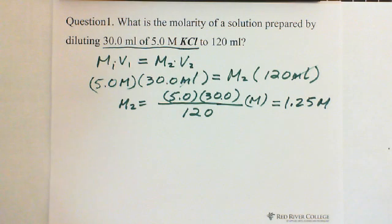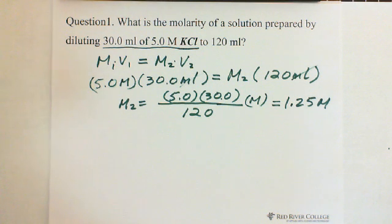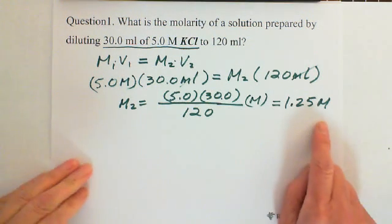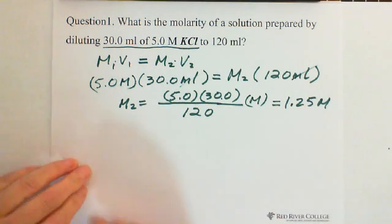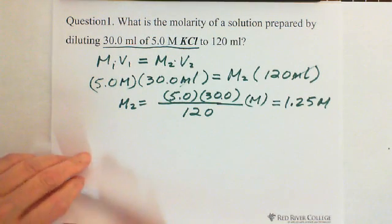So after diluting 30 milliliters of potassium chloride to 120 milliliters, the molarity gets lower — 1.25 molarity. That's the answer to question 1.